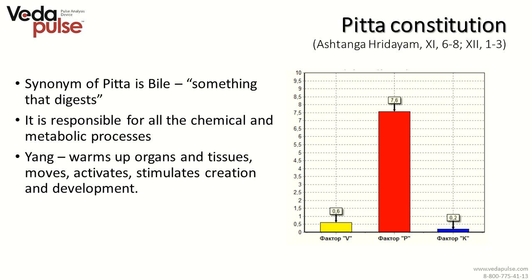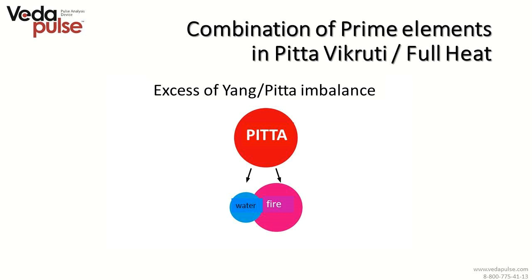The main locations of Pitta are the small intestine, stomach, sweat and sebaceous glands, liver, blood, lymph, organs of vision, and brain. Excess of Pitta colors feces and urine yellow, as well as the eyes and skin with a tiny yellowish tint. It also causes hunger, thirst, burning sensation, and difficulties with sleep.